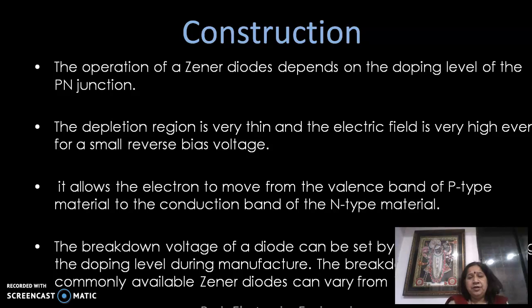The breakdown voltage is controlled by controlling the doping level at the time of manufacturing. The breakdown voltage of a commonly available zener diode can vary from 1.2 volts to 200 volts. Higher the level of doping, the depletion layer will be very thin and breakdown will occur at a very low voltage. If the doping level is moderate or less, then breakdown voltage will occur at a higher voltage.